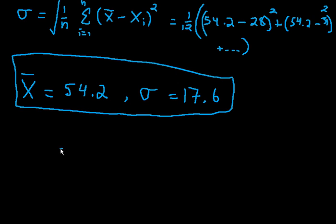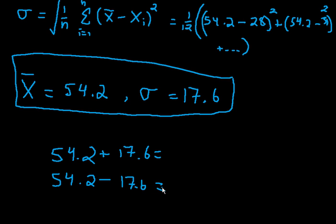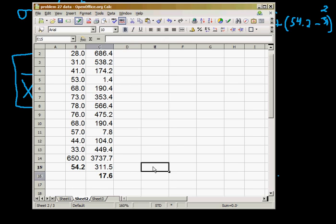In other words, I want to take 54.2, add to it 17.6. And I want to take 54.2, subtract from it 17.6, because that's within one standard deviation, plus minus 17.6. And we can again do that right in the program. We can type in equals 54.2 minus 17.6. So that's the low end, 36.6. And then I can do the same thing. We are adding here plus 17.6.